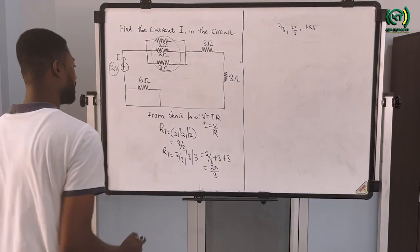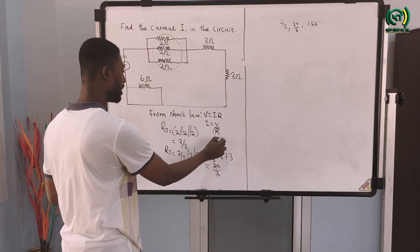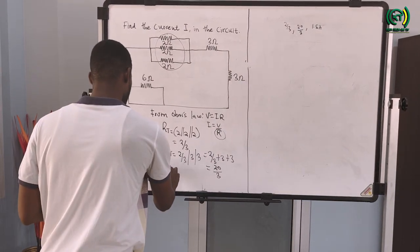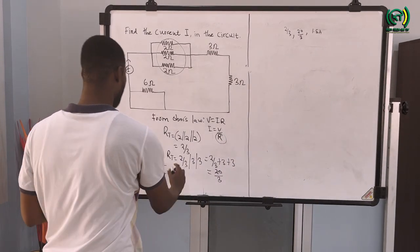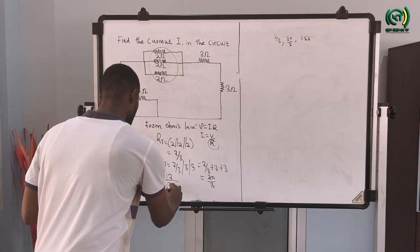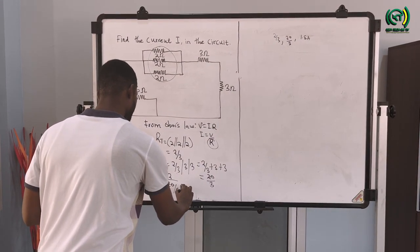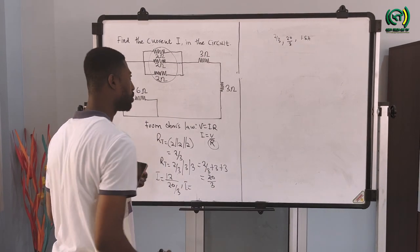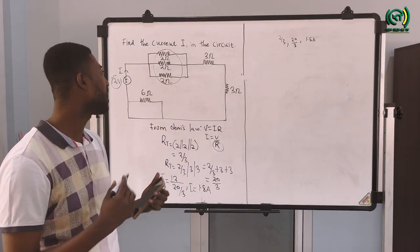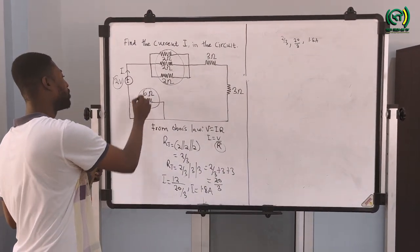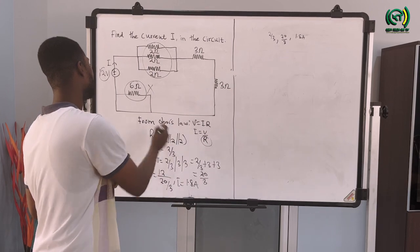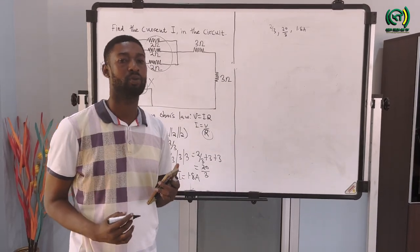That is the total resistance. I have been able to calculate my total resistance. Therefore the current in the circuit, I, will be equal to the voltage which is 12 volts over the total resistance which is 20/3. Therefore the current in the circuit will be equal to 1.8 amps. Remember, in simplifying the resistors I omitted the 6-ohm resistor because it has been shorted from the circuit, so we do not include the 6-ohm resistor.